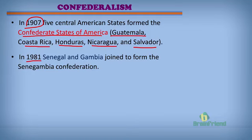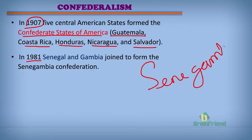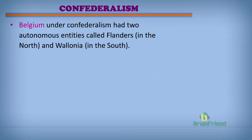In 1981, Senegal and Gambia joined to form the confederation known as Senegambia. And lastly, Belgium also practiced confederalism. In its practice of confederalism, Belgium had just two autonomous entities: Flanders in the north and Wallonia in the south. They came together to form the confederacy in Belgium.